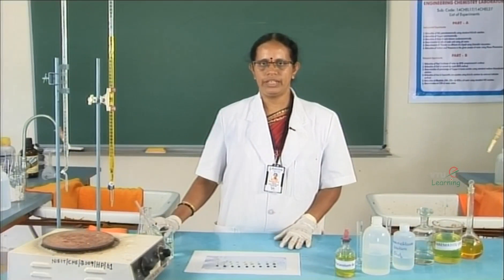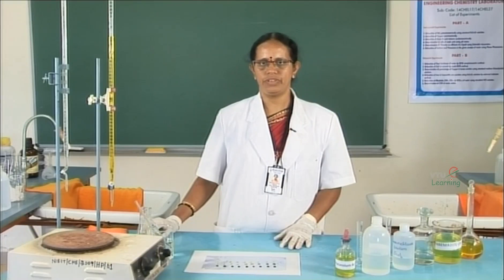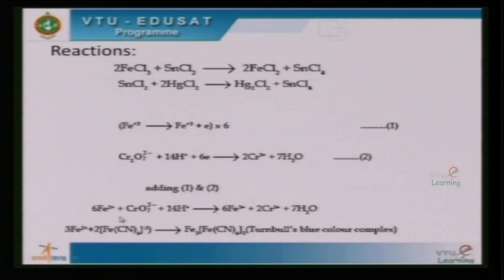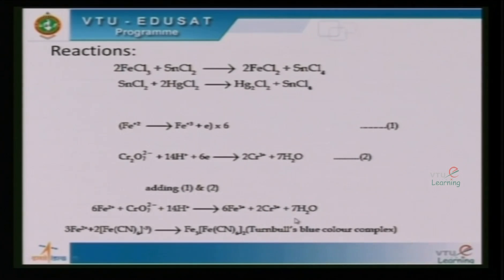The reactions involved in the experiment: In the first reaction, ferric chloride is reduced by stannous chloride to ferrous chloride and stannic chloride. In the second reaction, excess stannous chloride is oxidized by mercury chloride to a white precipitate of mercurous chloride, while stannous is reduced to stannic chloride. In the titration reaction, ferrous ions are oxidized by dichromate solution to ferric ions, with Cr³⁺ as the reduced product. Fe²⁺ ions combine with the indicator forming the ferro-ferricyanide complex, commercially known as Turnbull's blue.